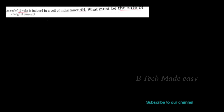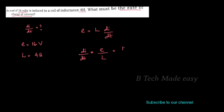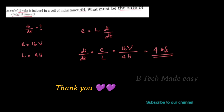What must be the rate of change of current? The rate of change of current is dI/dt. Using E = L × dI/dt, we get dI/dt = E / L = 16 volts divided by 4 henry. The answer is 4 ampere per second.